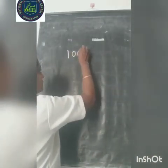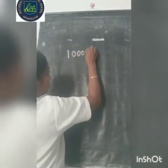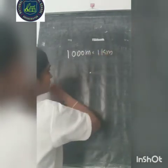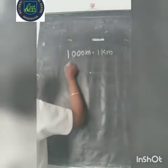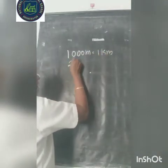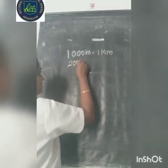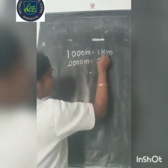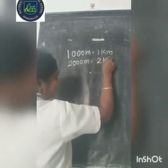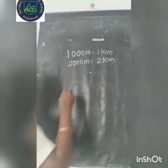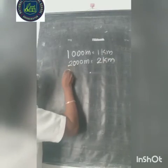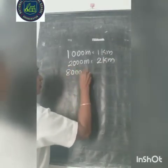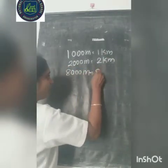We know that 1000 meter is equal to 1 kilometer. Therefore, 2000 meter is equal to 2 kilometer. And 8,000 meter is equal to 8 kilometer.